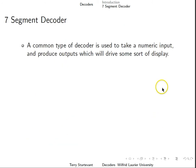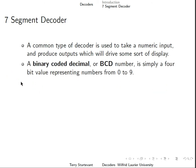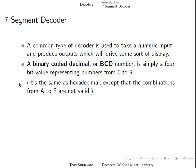A common type of decoder is used to take a numeric input and produce outputs which will drive some sort of display. A binary coded decimal, or BCD number, is a 4-bit value representing numbers from 0 to 9. It's the same as a hexadecimal number, except that the combinations from A to F are not valid.